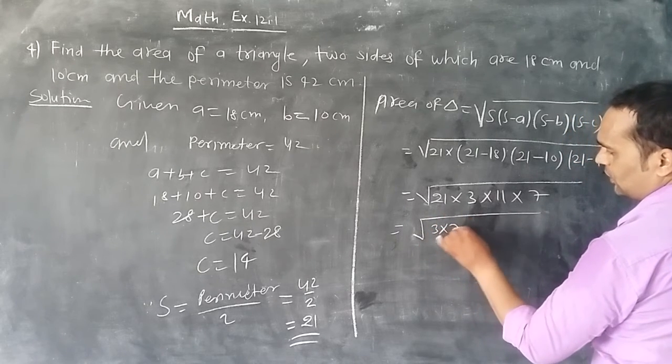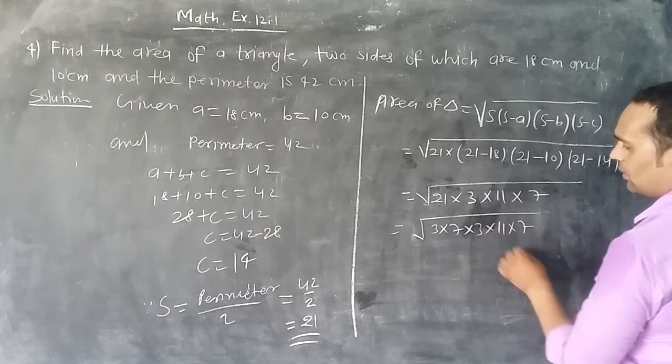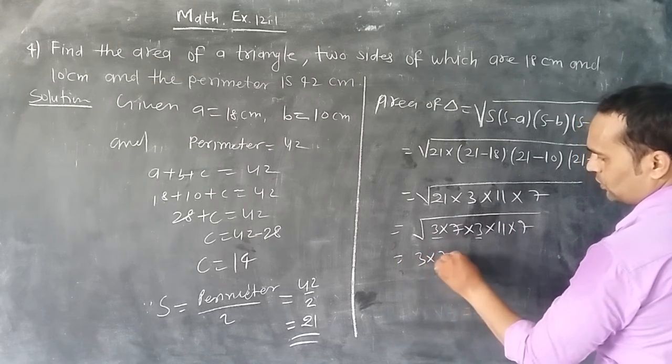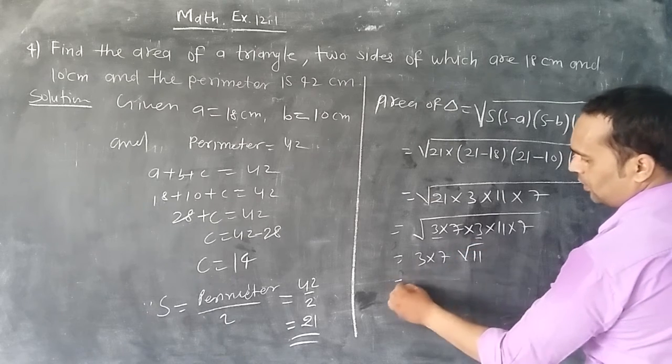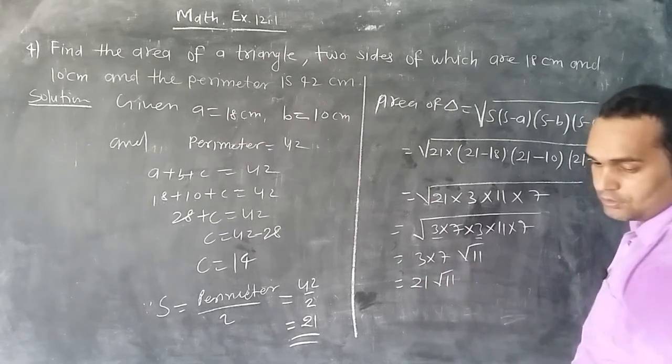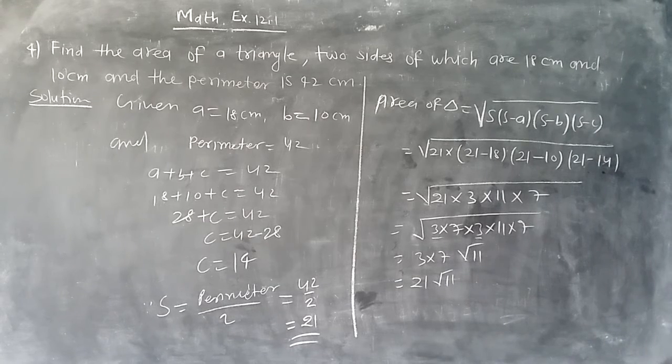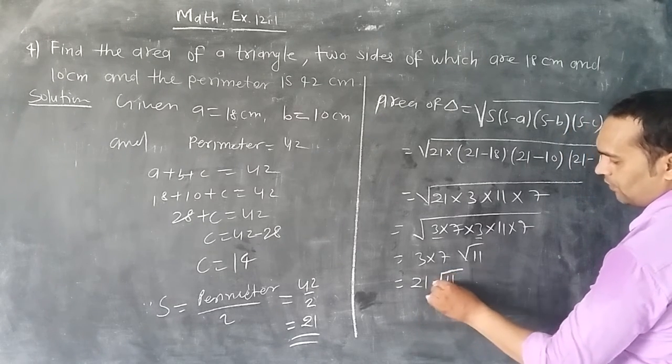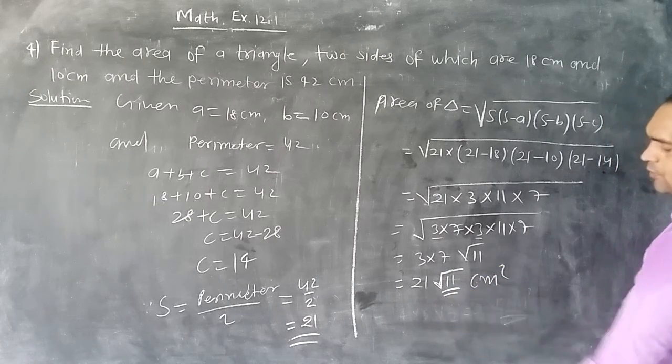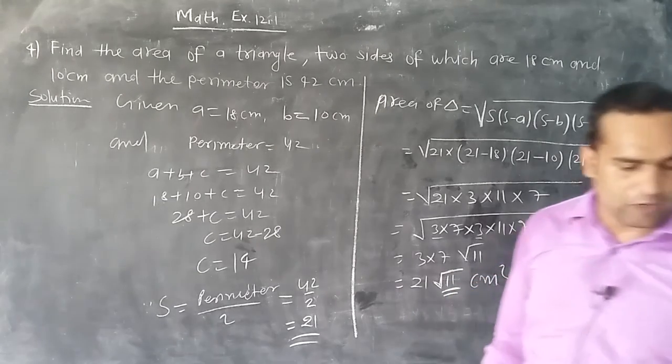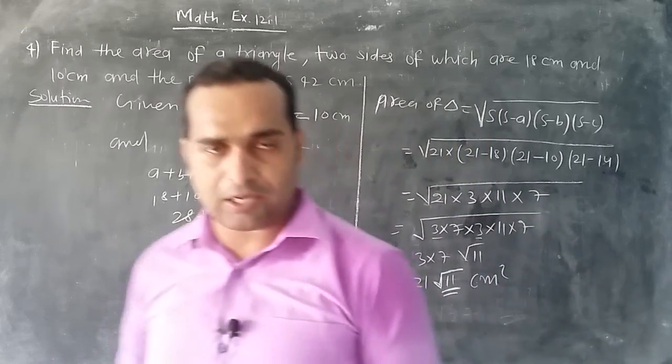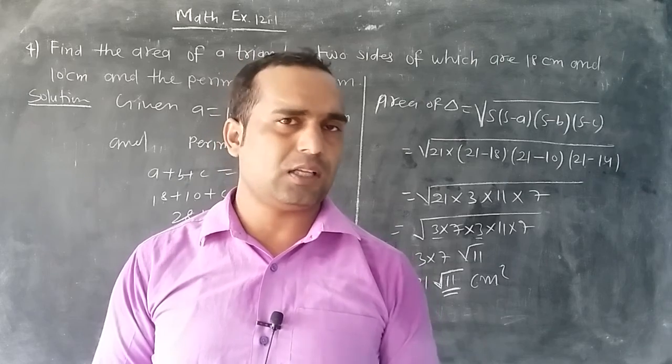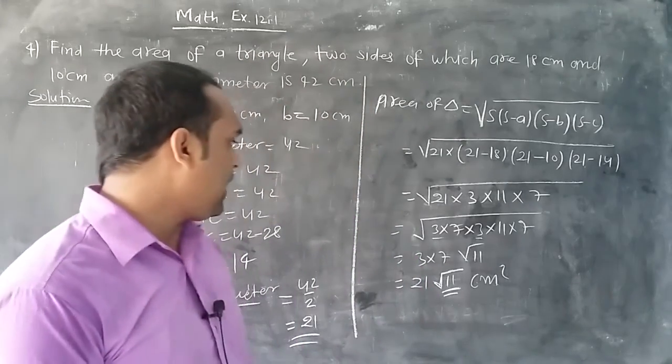This becomes √(3×7×3×11×7). Taking out pairs: 3 and 7 come out, giving 3×7×√11, which equals 21√11 cm². You can also calculate the numerical value by finding √11 and multiplying.